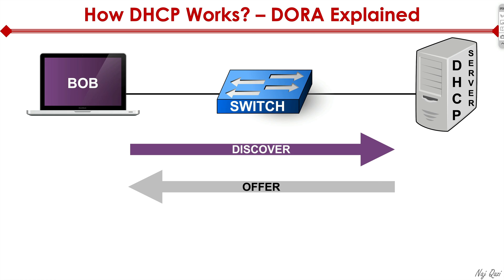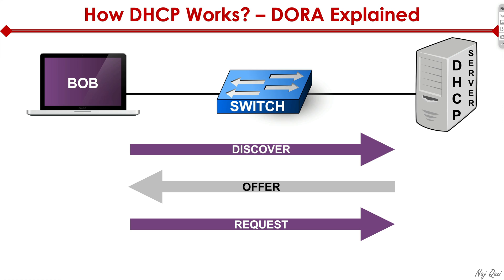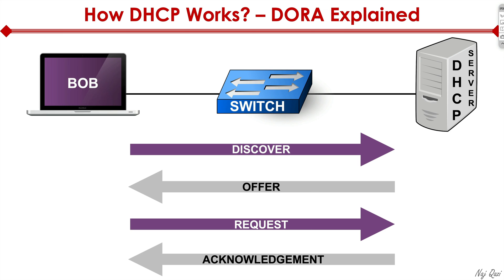Inside that offer packet, we'll see an IP address and a lease time. Bob then sends a Request to the DHCP server saying he accepts the offer. Finally, the DHCP server responds back with an Acknowledgement, leasing that IP to Bob — and now Bob is good to go. This is where the acronym DORA comes in: Discover, Offer, Request, Acknowledgement — the first letter of each packet type. This is the easiest way to remember it from an exam perspective, because this could very well be an exam question.